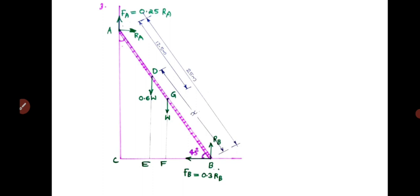Drawing the figure: AB is the ladder, length 25 metres. The total weight of the ladder is W, acting at the centre of gravity, point G, vertically downwards. That is the midpoint of the ladder, so 25 divided by 2 is 12.5 metres. AG equals GB equals 12.5 metres. If the ladder slips, end B will move to the right, so frictional force FB equals mu times RB, that is 0.3 times RB, acting to the left.